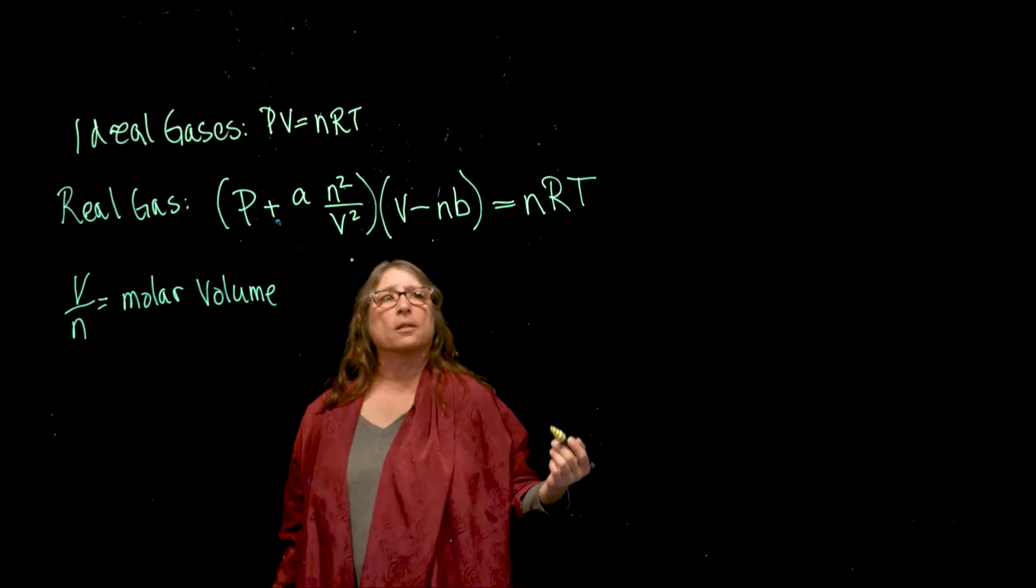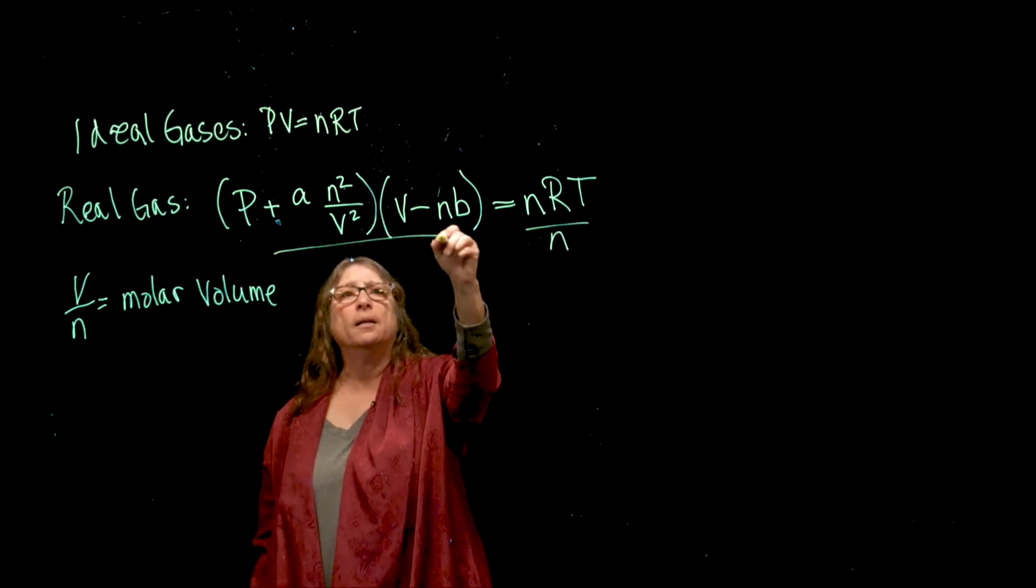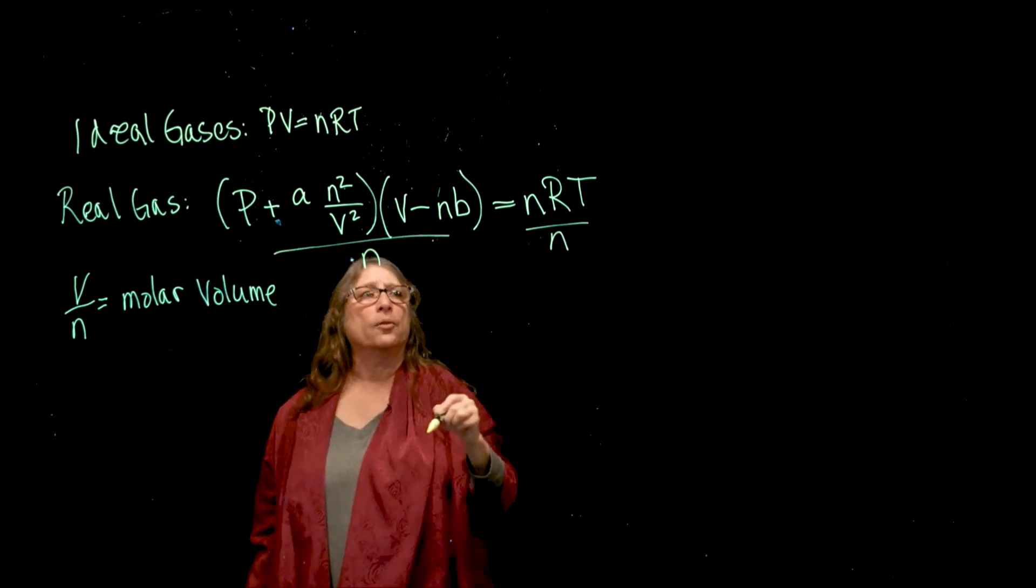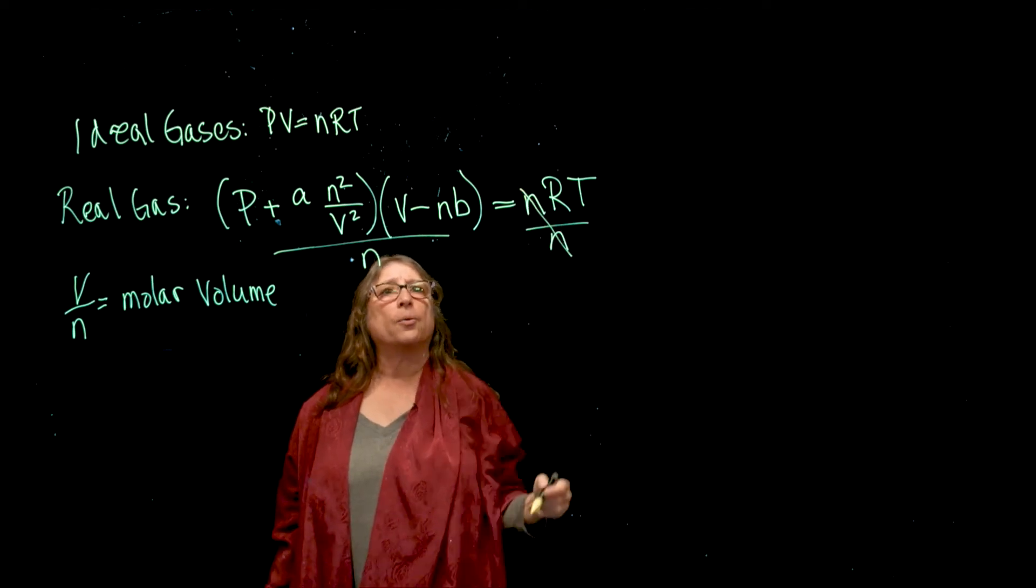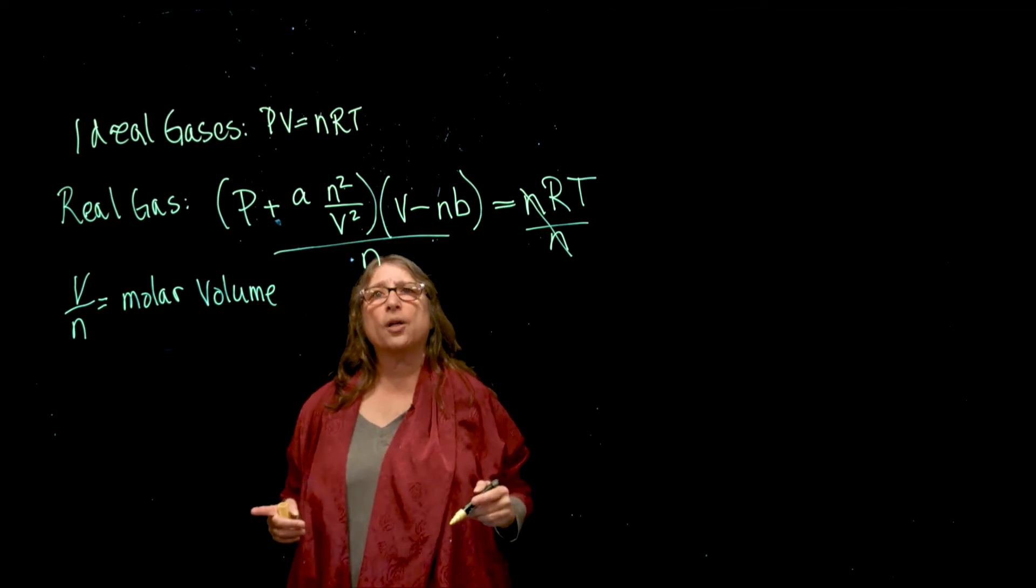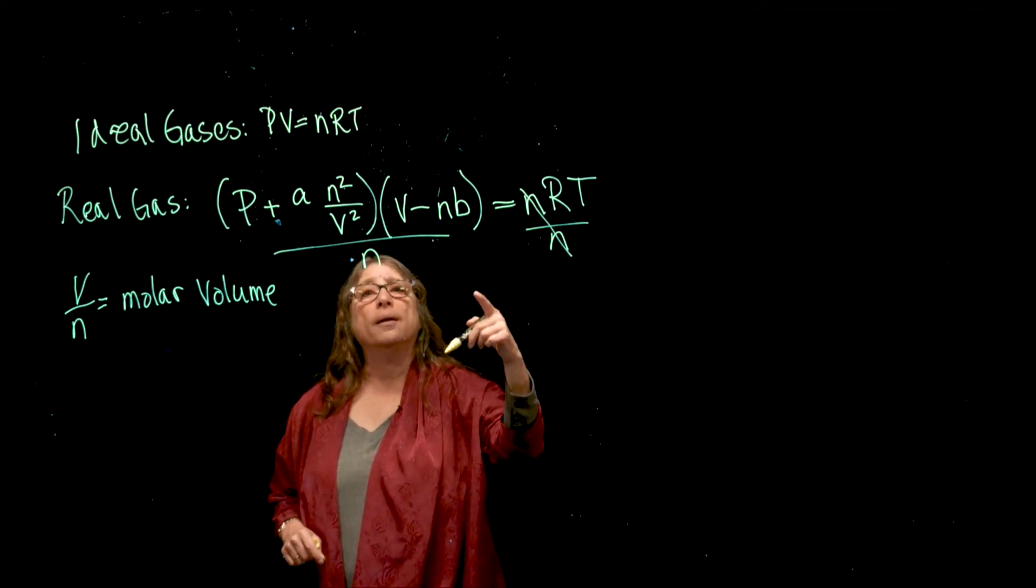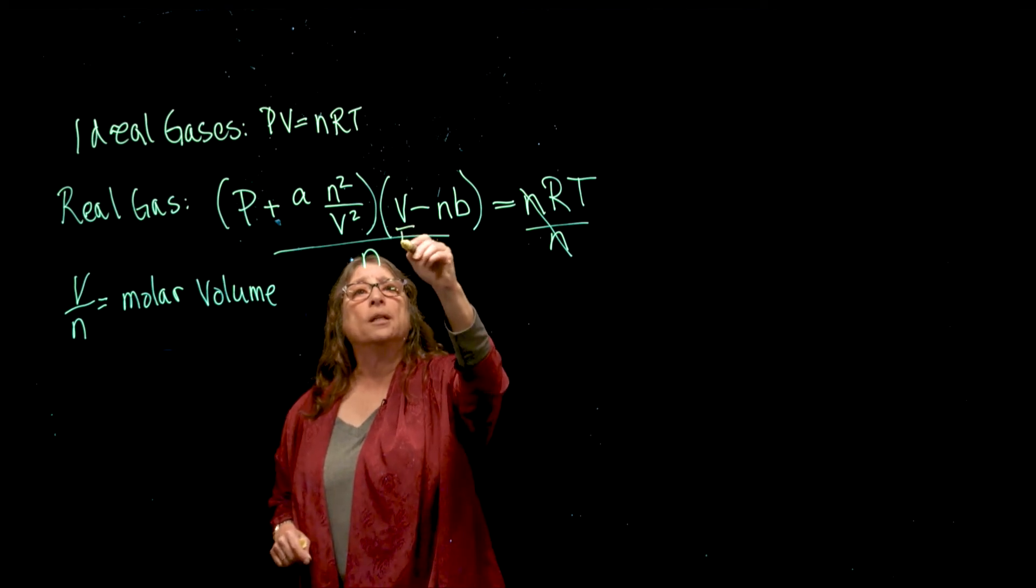The first thing I'm going to do is divide both sides by n, the number of moles, and that's going to simplify the right side. These two terms are being multiplied by each other, so I only need to divide n into one side, and I'm going to include it here.